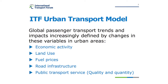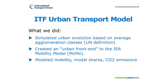What we mean by urban context includes variables such as economic activity, land use, fuel prices, road infrastructure, and public transport services — both in quality and quantity. What the urban transport model does is simulate, under different scenarios, what would be the evolution of this urban context in the average agglomeration of each type.